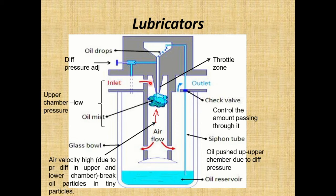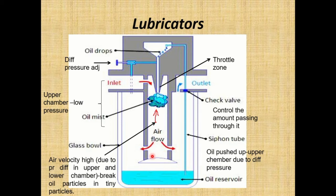Because air velocity is high, it breaks down the oil mist and carries oil particles with it toward the outlet. Some oil particles are collected at the bottom section, and a baffle ensures oil never enters the main section. This is how the lubricator works — the complete operation is based on the pressure difference in the chamber.